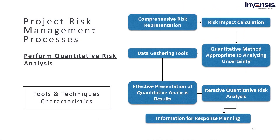Now let us talk about the tools and techniques for the perform quantitative risk analysis process. Firstly, we have comprehensive risk representation — risk models permit representation of most risks that have an impact on an objective simultaneously, and they represent both opportunities and threats to the project's objectives. The second characteristic is risk impact calculation — quantitative models facilitate the calculation of the effective risks identified and quantified at a level of detail below the total project, that is, on the project objectives. The third characteristic is the quantitative method appropriate to analyzing uncertainty — for instance, probability models use a quantitative method that addresses uncertainty.